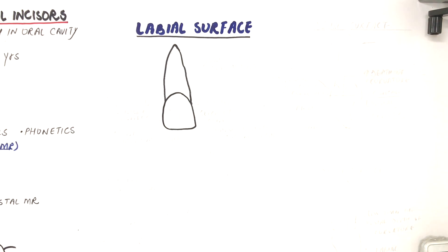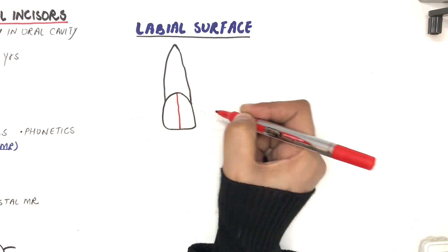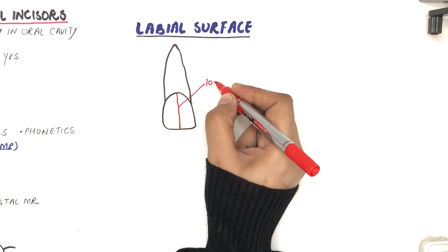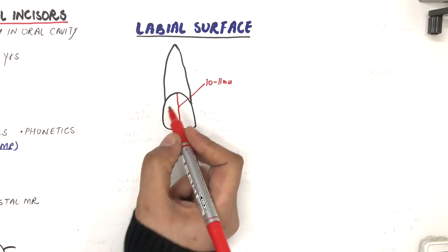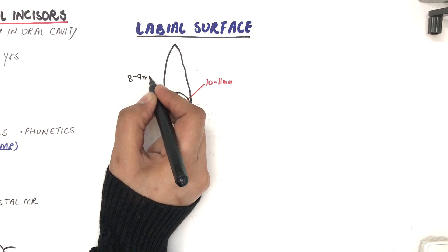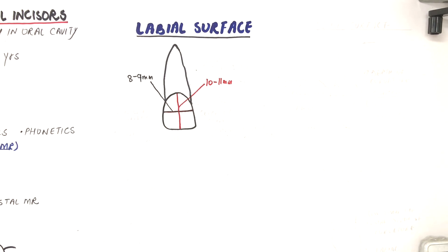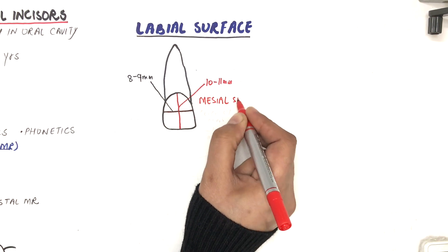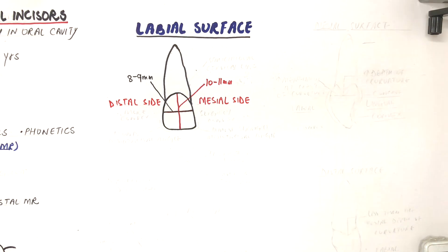The crown of the average central incisor will be 10 to 11 mm in length and 8 to 9 mm in width at the incisal end. The incisocervical dimension of a central incisor is greater than its mesiodistal dimension. The labial surface is convex in both directions.